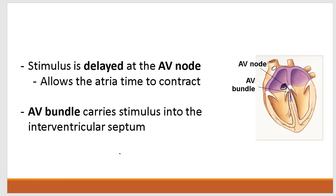Once the stimulus reaches the AV node between the atria and ventricles, it is delayed. The cells of the AV node are less efficient at passing the action potential from cell to cell, so the signal pauses at the AV node for about 100 milliseconds. This is not accidental — the delay gives the atria enough time to contract and squeeze blood down into the ventricles before the stimulus is passed down to the ventricles. After pausing, the action potential enters the AV bundle, carrying the stimulus down into the interventricular septum, without yet stimulating the ventricular myocardium to contract.